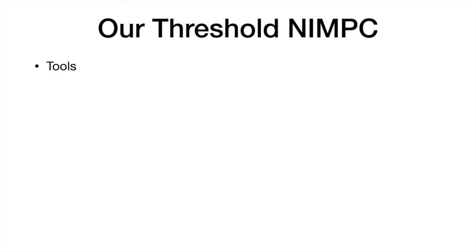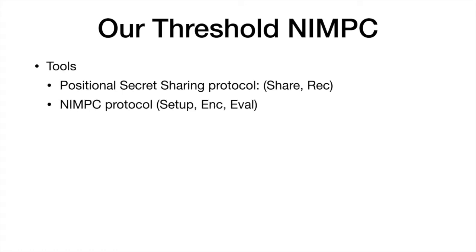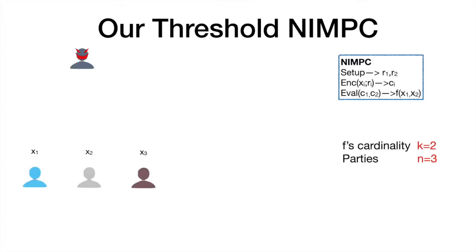For our construction, we use the positional secret sharing scheme just mentioned and a standard non-interactive multi-party computation protocol — which, let me remind you, is a protocol that allows parties to collude with the evaluator. At a high level, assume for simplicity we have a function of arity 2 and only three parties, so only two of those will be participating in the online phase. During setup, we create an encoding for all the possible inputs that function f could get. Since the function has two inputs and each party's input is just one bit, for the first input of the function we create an encoding of zero using randomness r1 of the non-interactive MPC protocol, and an encoding of one using randomness r1. We do the same for the second input.